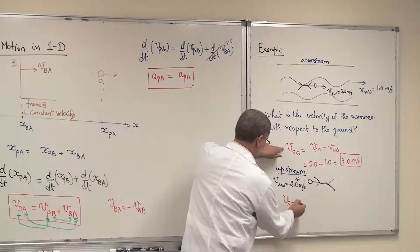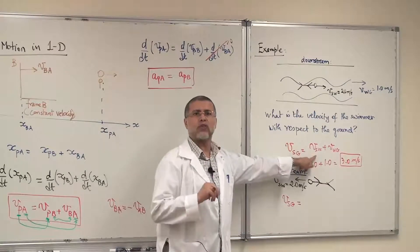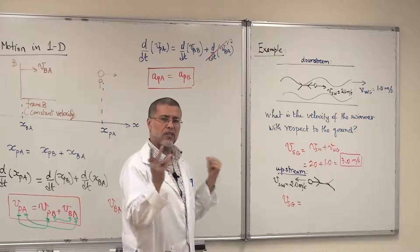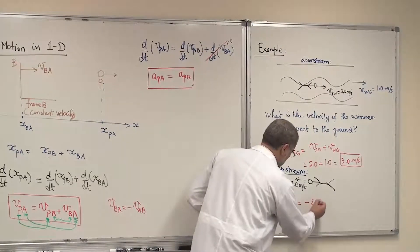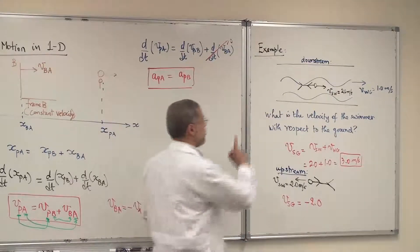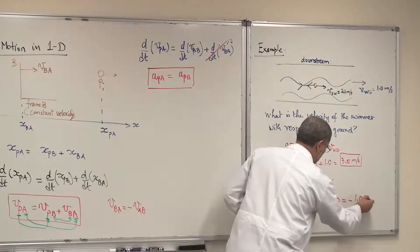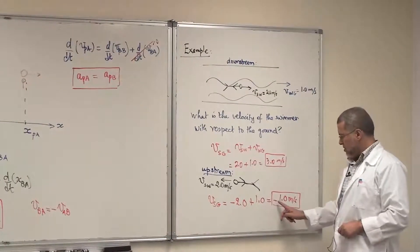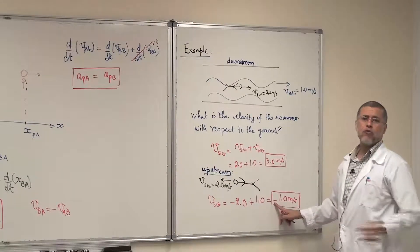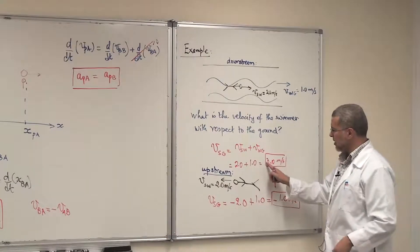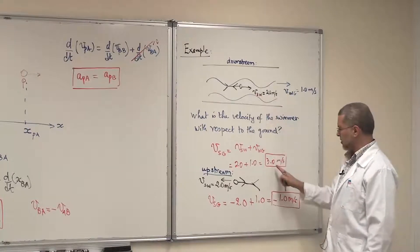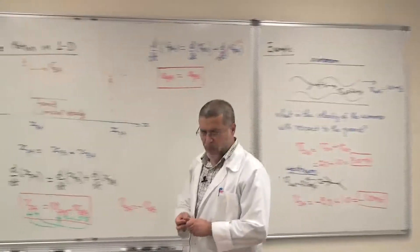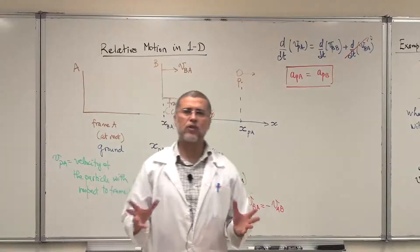Velocity of the swimmer with respect to the ground: the swimmer is now moving to the left, so we put minus 2.0, and the water is moving to the right, so plus 1.0. This gives minus 1 meter per second. The minus sign indicates the direction of motion — to the left. The swimmer will still move to the left with a speed of one meter per second. The minus sign indicates the direction. I hope this is clear for relative motion in one dimension.